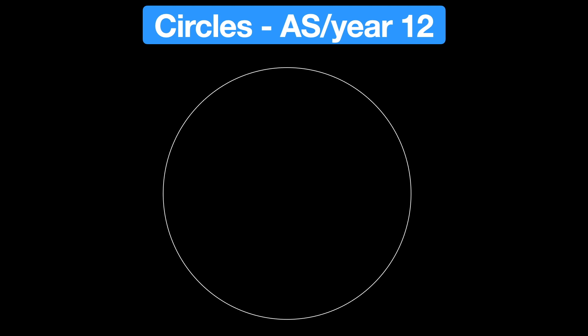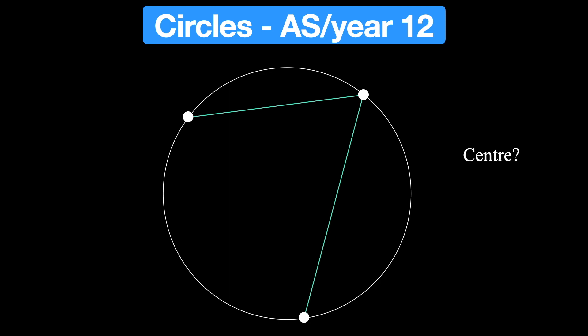In this video I'm going to explain how to find the center of a circle given three points on that circle. You could also think of this as starting with a triangle and drawing a circle through the three corners of the triangle or vertices and then looking for what's called the circumcircle.